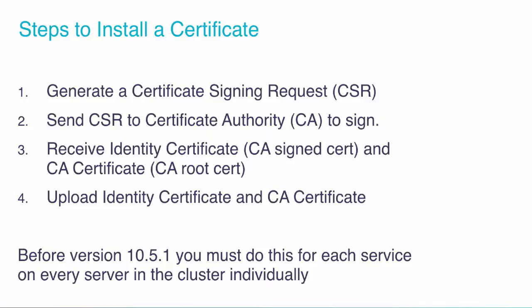Step four is taking both of those — the identity certificate and the CA certificate — and uploading them to your server for each service. You've got many services on Communications Manager, like Tomcat, Call Manager, et cetera, and you have to do that for each service. Before 10.5.1, you'd have to do it for each service on every single server — so your publisher, multiple subscribers, and IM and Presence servers that are part of the cluster. You'd have to go to each individual server and do the same four steps for every service you wanted to have a signed certificate for.